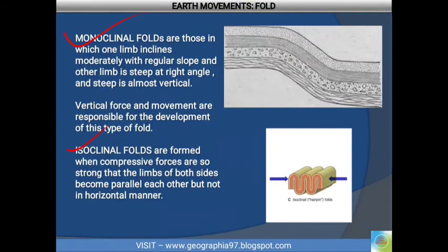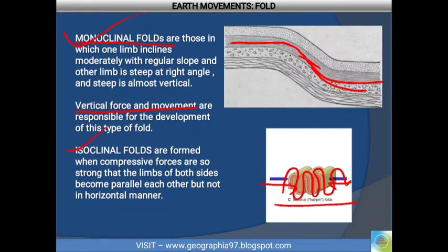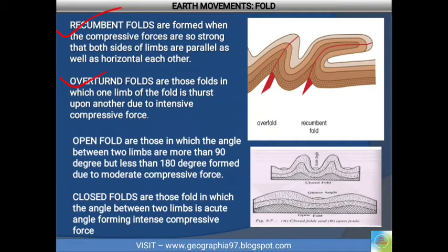In the case of monocline, vertical forces and movements are responsible for its development. When one limb has a moderate regular slope and the other is vertical or steep at a right angle, that is called a monocline. Isocline is formed when the compressive force is so strong that both limbs are formed parallel to each other but not in a horizontal manner. When both limbs are parallel as well as horizontal to each other, that is called a recumbent fold.